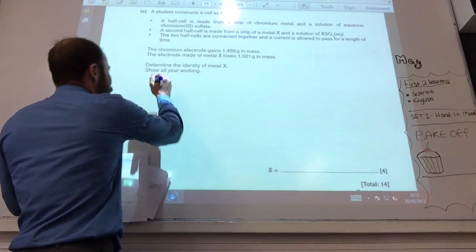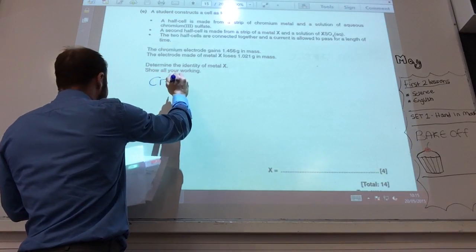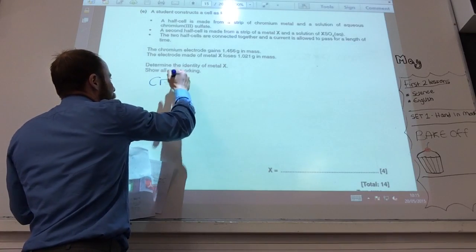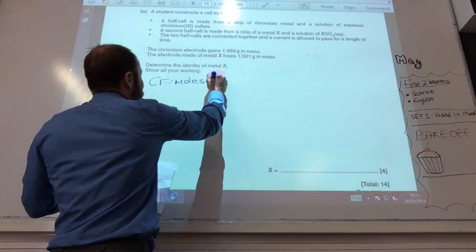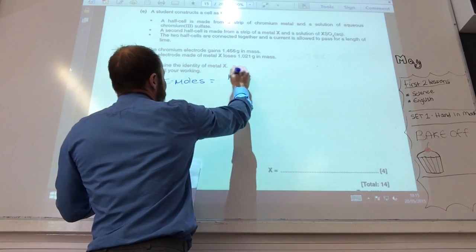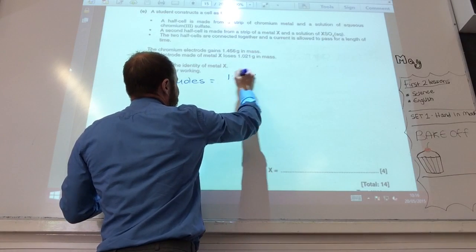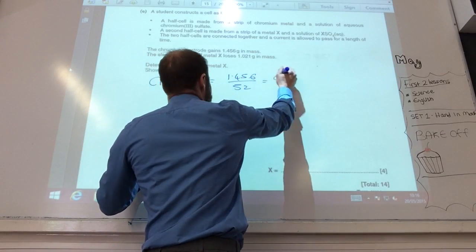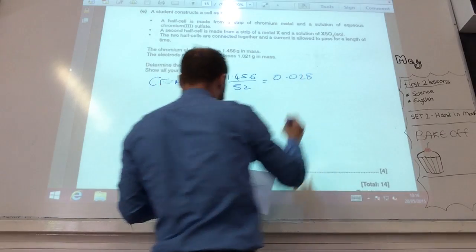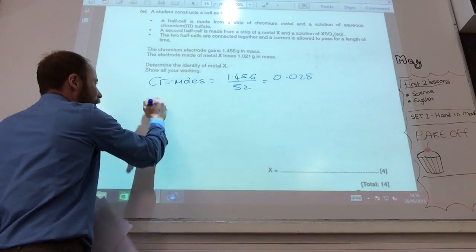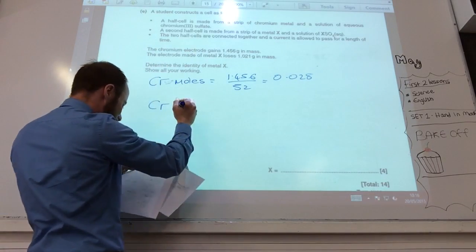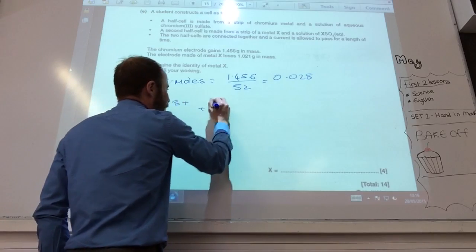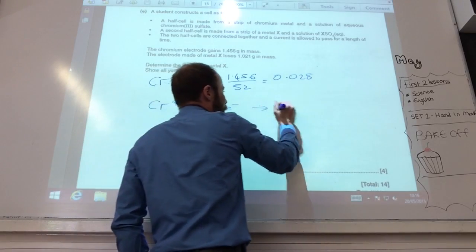The first thing I would do is work out your moles of chromium. Chromium is 1.56 divided by the molar mass of chromium, which is 52. That gives you 0.028. Now, you know in this reaction, chromium 3+ has gained 3 electrons to become chromium metal.